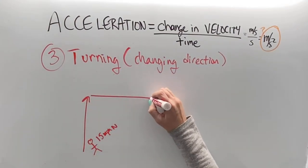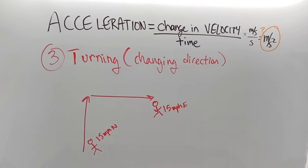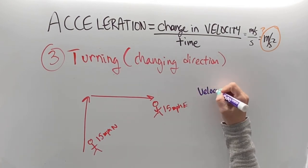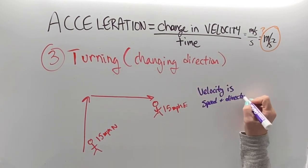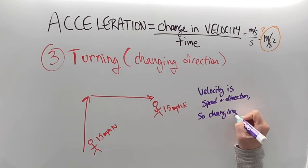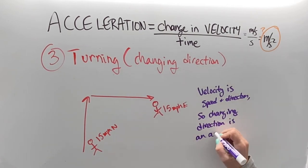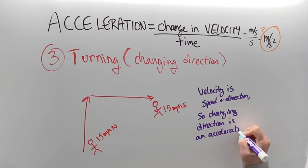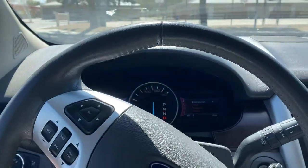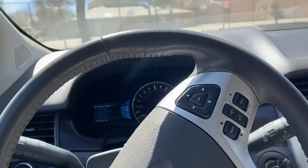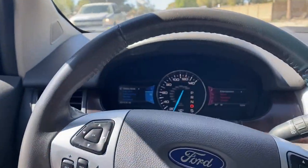The last kind of acceleration is turning — that changing of direction. Because velocity is speed in a specific direction, anytime we turn we are changing our velocity, and that is considered an acceleration. It takes a force to make that happen. Here we can see in the car, when I turn around the corner, that is considered an acceleration.